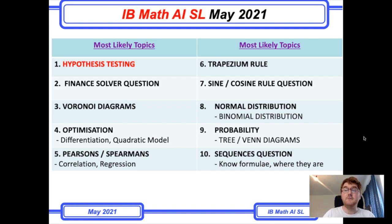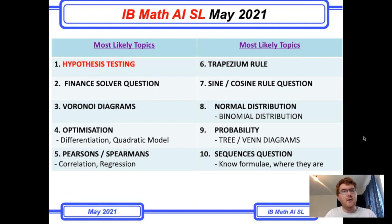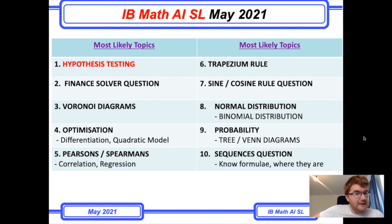I think there'll be a finance solver question of some kind, so you need to be very comfortable with your graphical display calculator, whether you have a Casio or a TI-Nspire. Know how the functions work — what does N stand for, what does I% stand for, what does PMT stand for — and how to operate it with different question contexts.